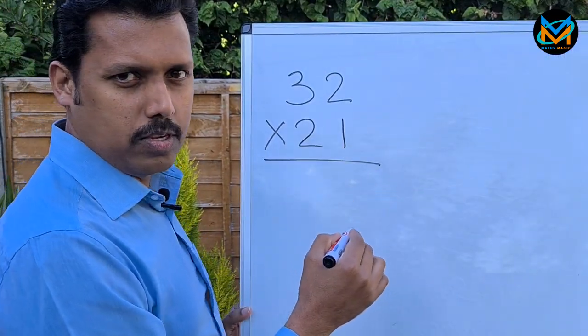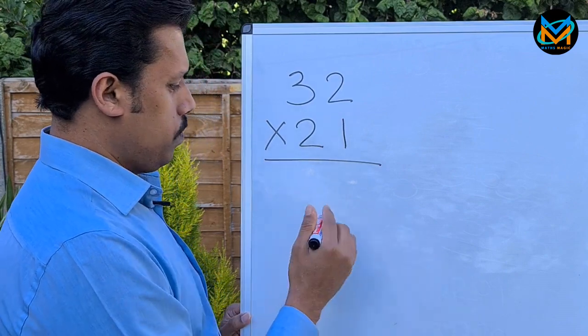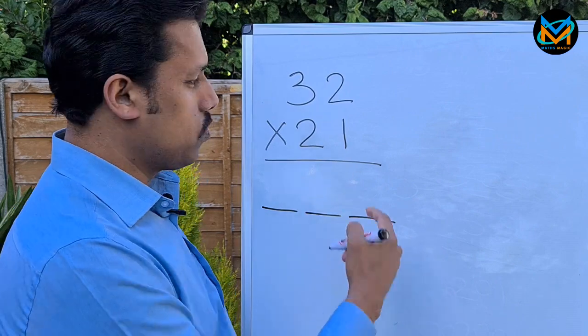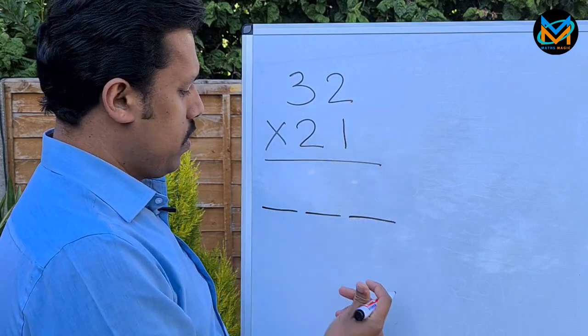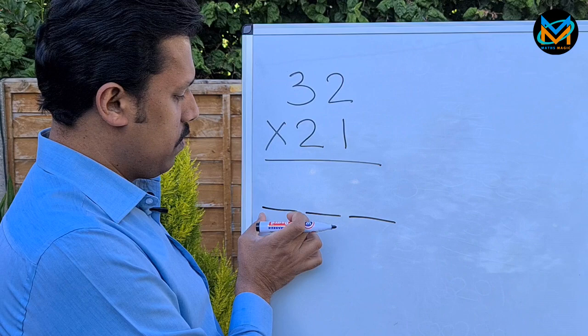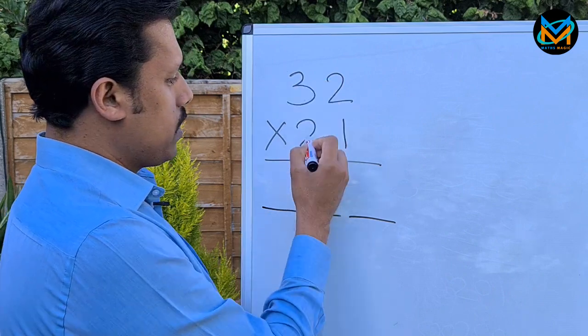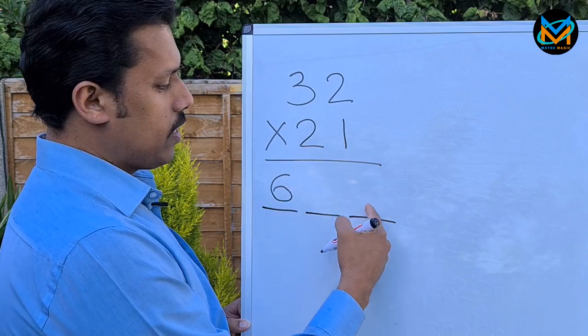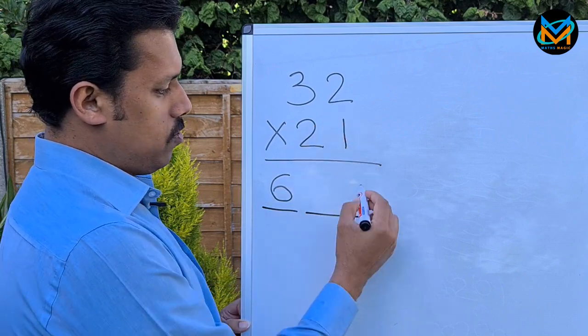32 times 21. The answer contains minimum three digits. To find the first digit, multiply these two numbers: 3 times 2, which is 6. To get the right digit, multiply these two: 2 times 1, which is 2.